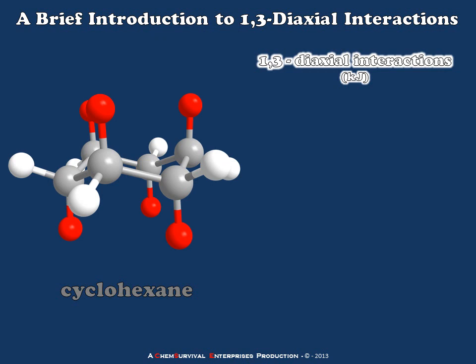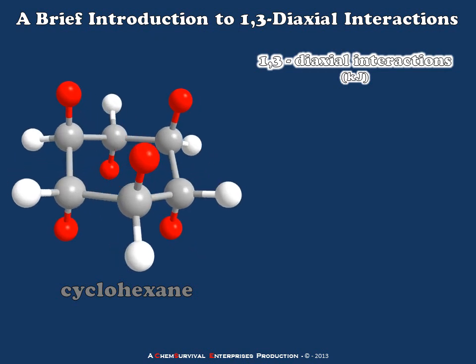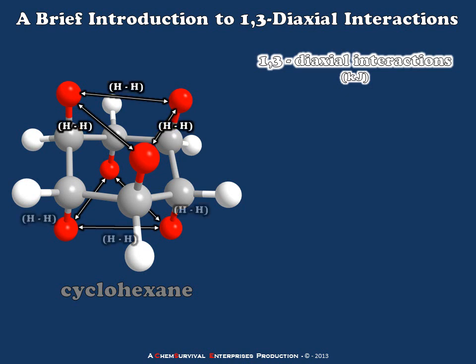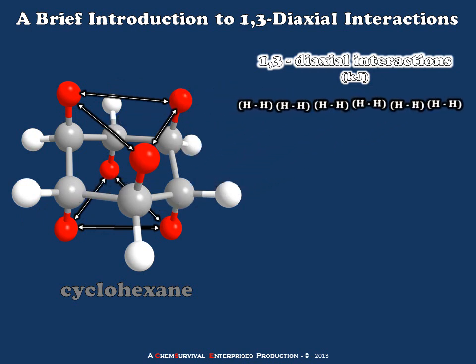Now let's take that cyclohexane molecule and do a quick inventory of all the actual interactions within it. On the top, we have three different interactions among hydrogens. On the bottom, also three interactions, all among hydrogens — so there will be a total of six different 1,3-diaxial interactions, but in this case they're all exactly the same: all between two hydrogens. By default, we make this equal to zero kilojoules per mole. So when we report a 1,3-diaxial interaction energy, we're always comparing it to the baseline of a hydrogen-hydrogen interaction.